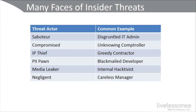Next, we have the compromised threat actor. That's basically somebody who doesn't know they're being taken advantage of. For example, an unknowing comptroller or someone in the finance department that's been compromised because maybe they added a USB key to their system or they were part of a phishing attack. Then we have what's called the IP thief — a contractor or a temporary worker who is simply greedy and is going to steal data to sell it on the dark web or the deep web.